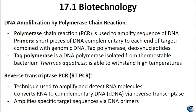Taq polymerase is a special DNA polymerase that comes from a bacteria called Thermus aquaticus, a thermophilic organism that lives in hot springs. Its DNA polymerase can tolerate really high temperatures, which are used routinely in PCR. During PCR, the mixture with all of the primers, genomic DNA, Taq polymerase, and deoxynucleotides is subjected to temperature cycles. The Taq polymerase adds new nucleotides to the primers, and the process is repeated multiple times resulting in an exponential amplification of the target sequence.